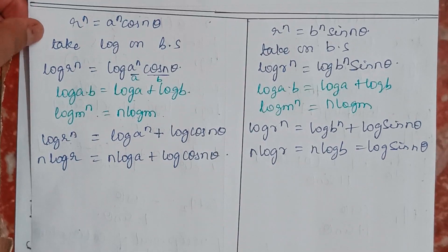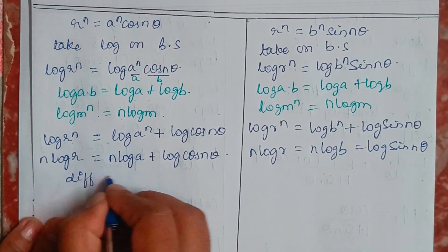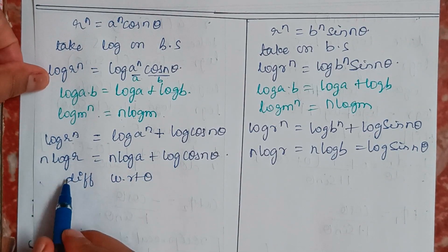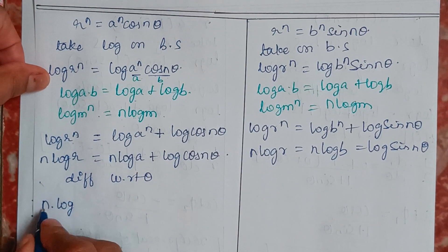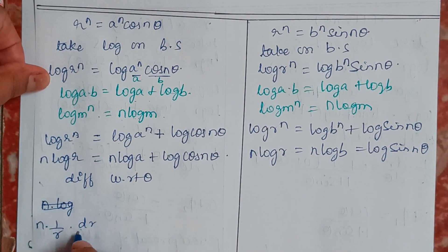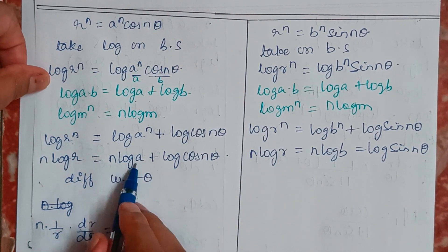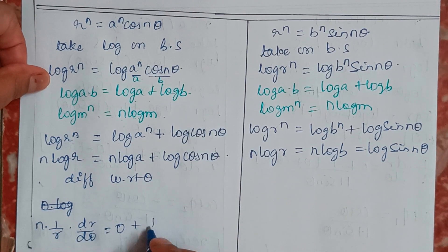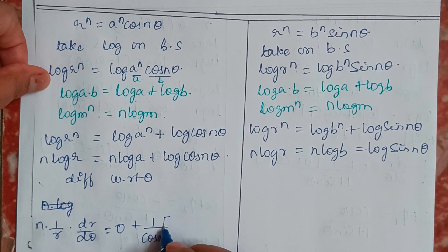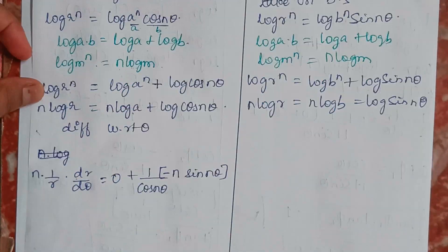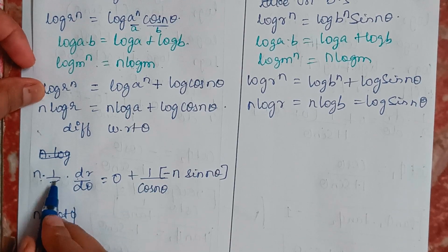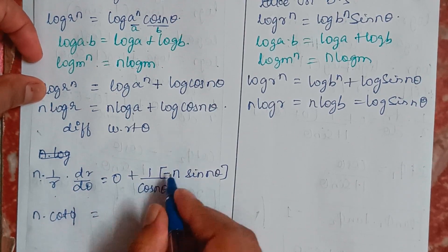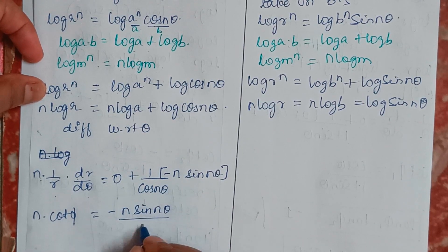Now, after taking log, we differentiate with respect to θ. Differentiating n·log r with respect to θ gives n·(1/r)·(dr/dθ). Since n·log a is a constant, it becomes 0, and the right-hand side gives (1/cos(nθ))·(−n·sin(nθ)). So cot φ₁ equals −n·sin(nθ)/cos(nθ).